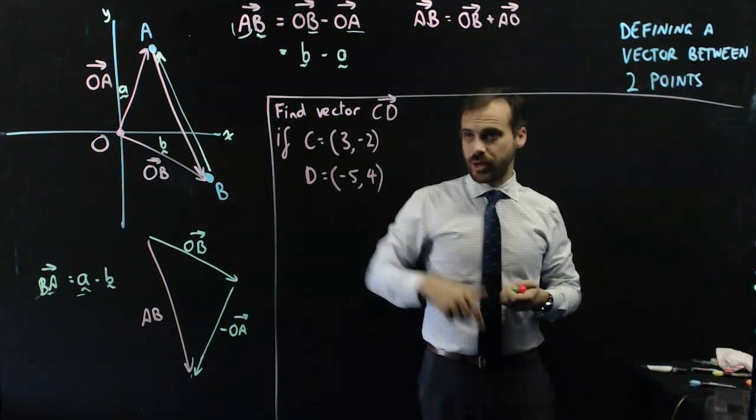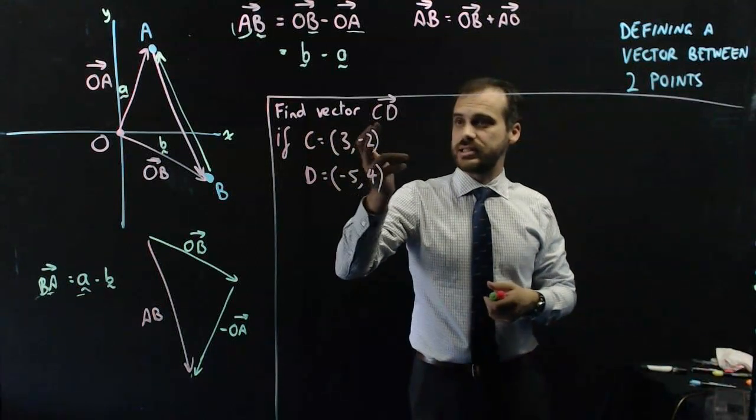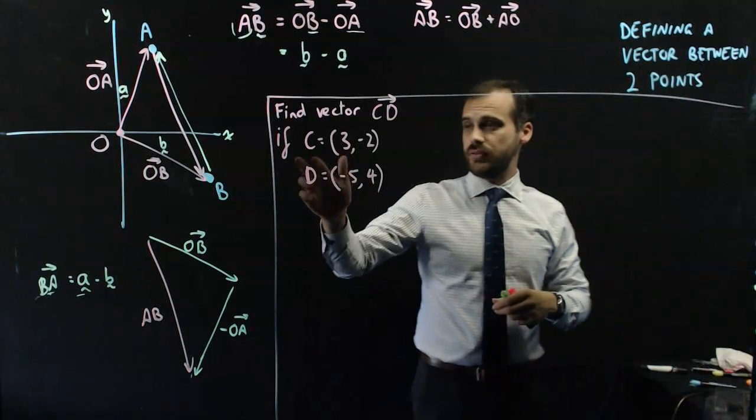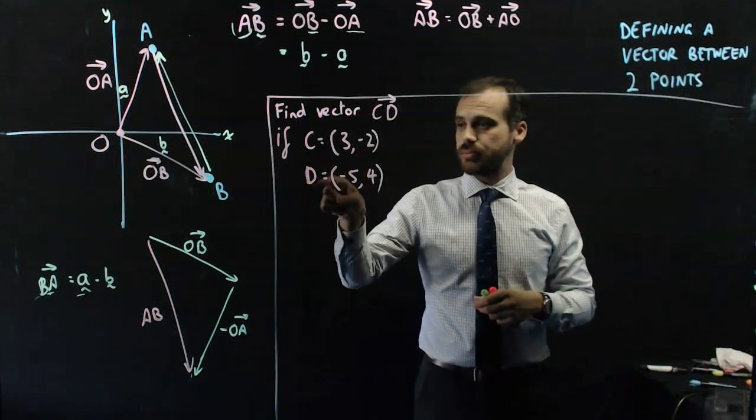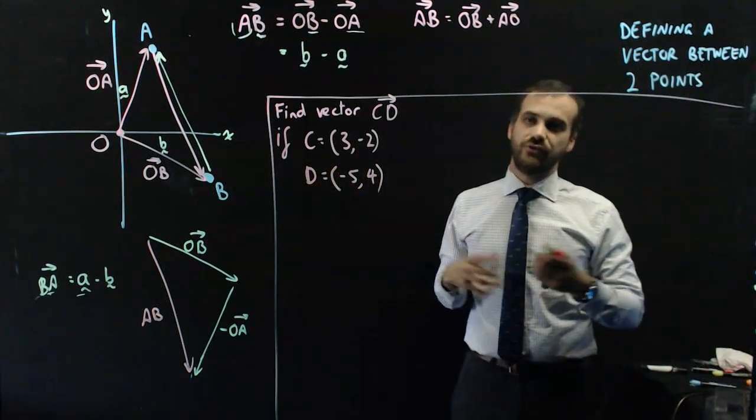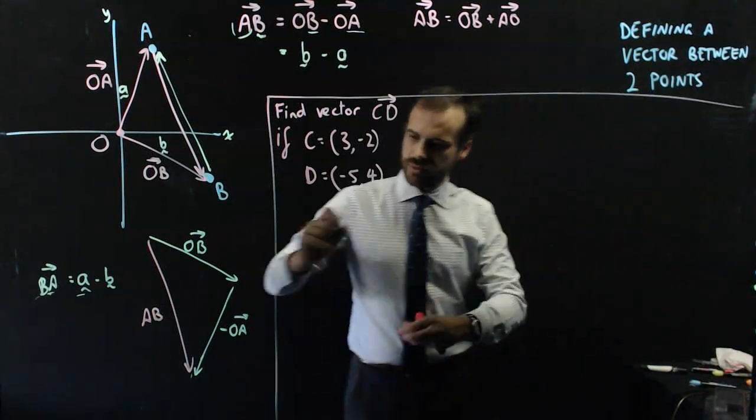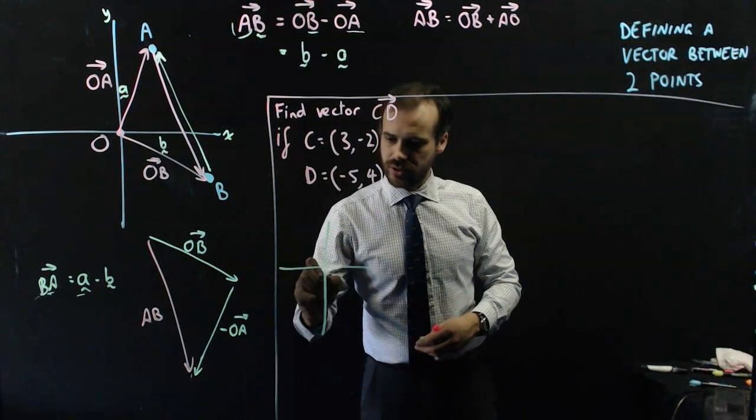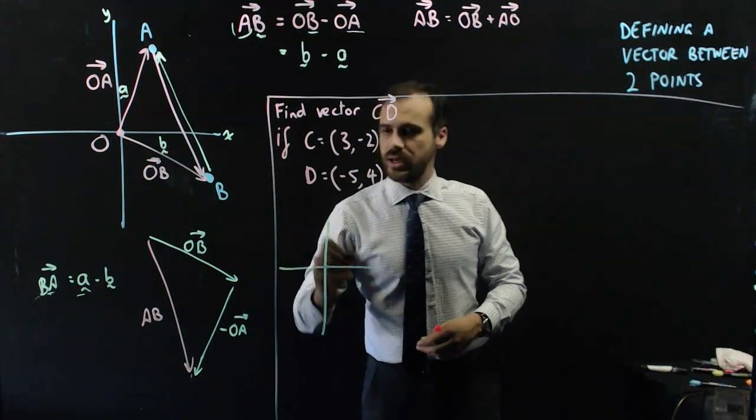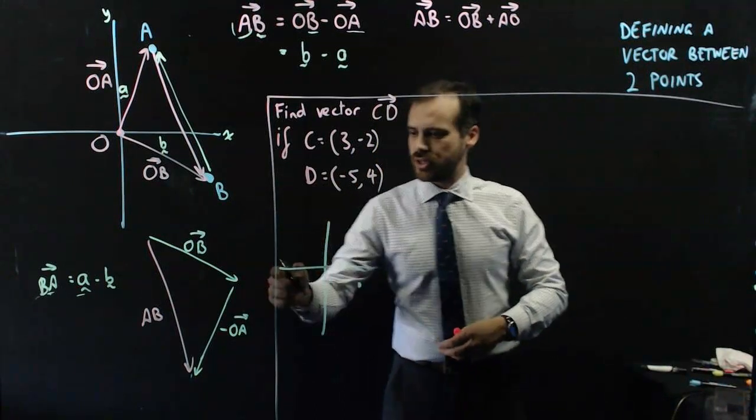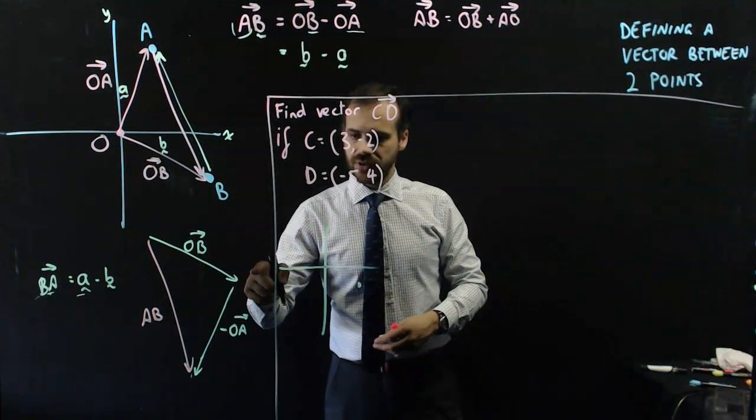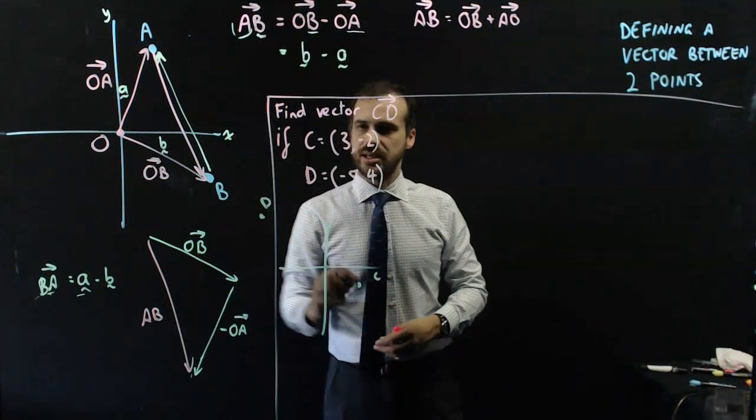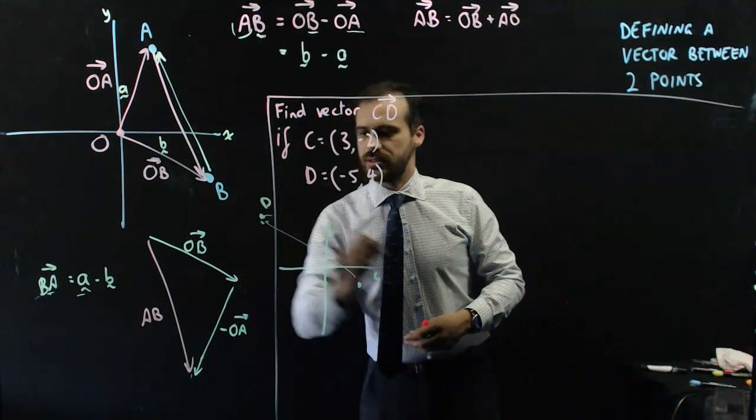So here's the sort of question we might be able to answer. Find vector CD for the vector from point C to point D if point C equals (3, -2) and point D equals (-5, 4). Just to give you a bit of a visual, 3, -2, 1, 2, 3, -2, something like that and D is a -5, 1, 2, 3, 4, -5, 4, 1, 2, 3, 4.